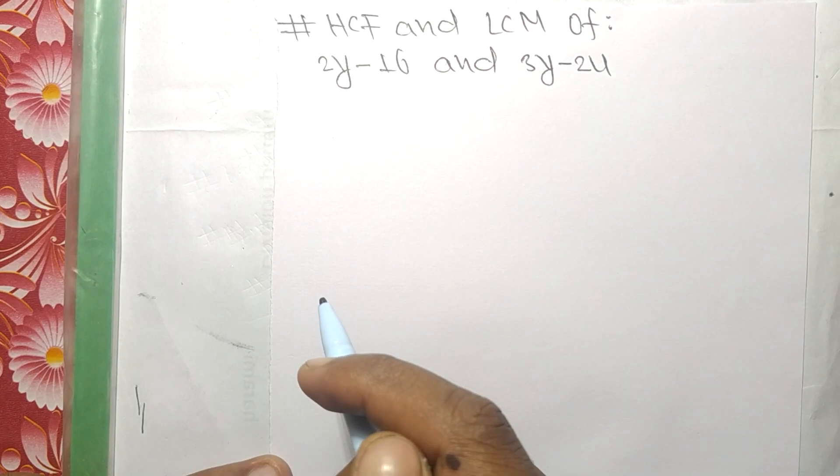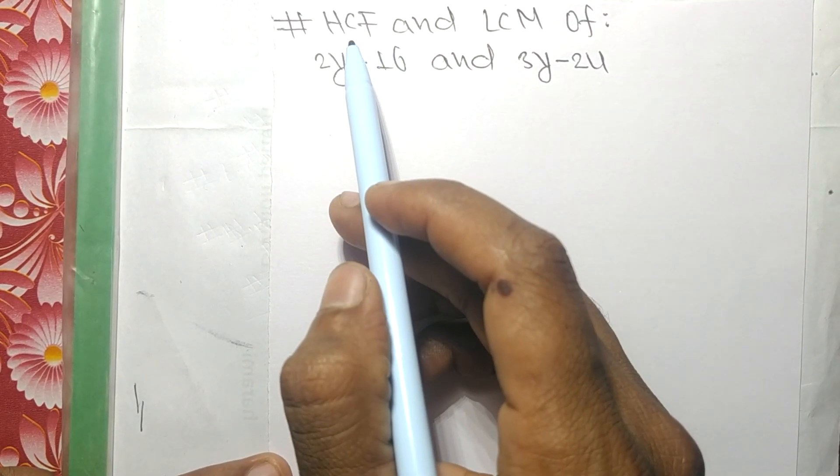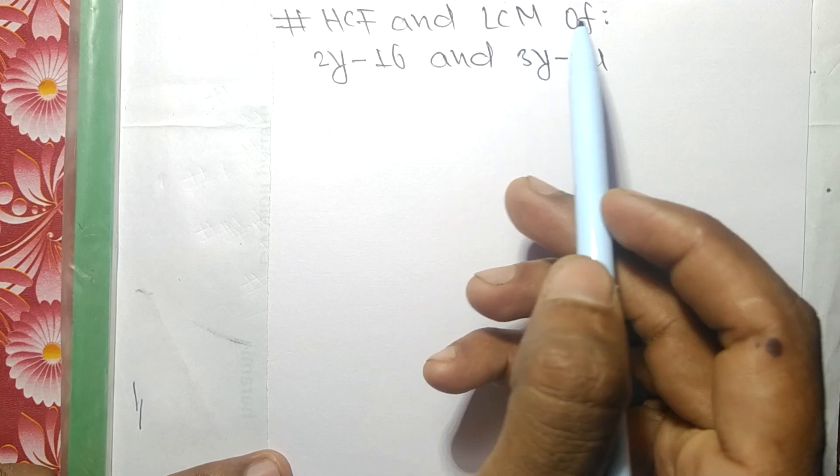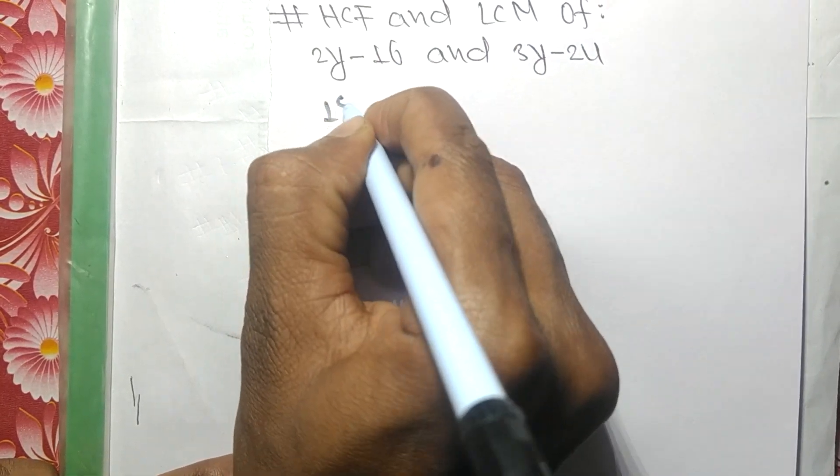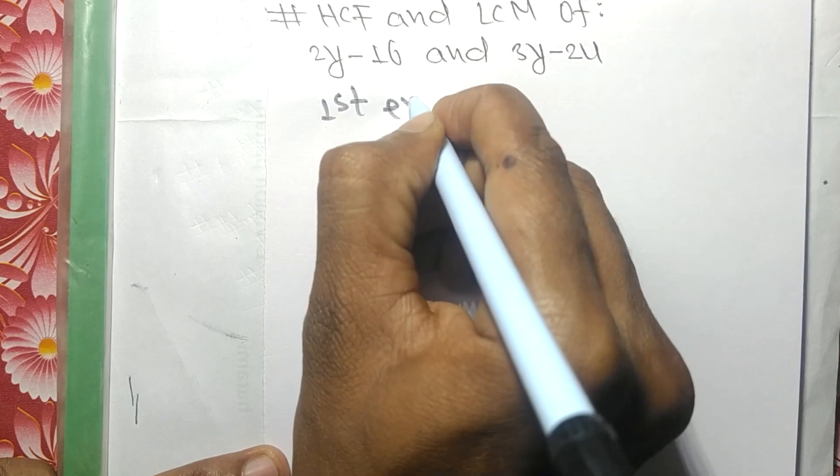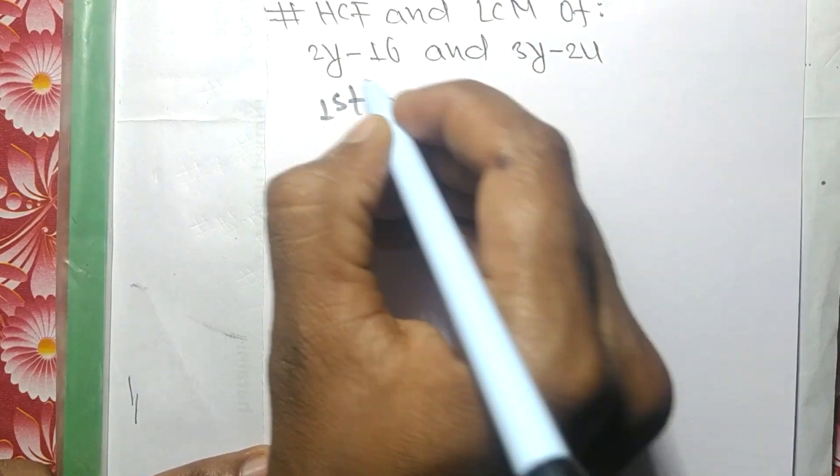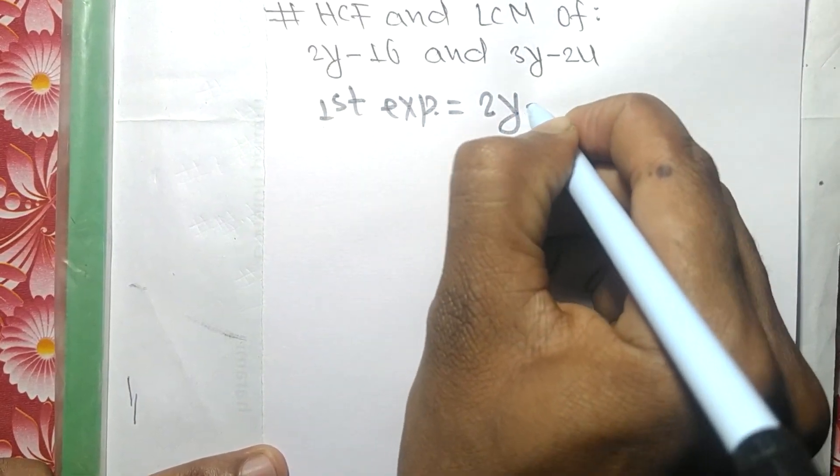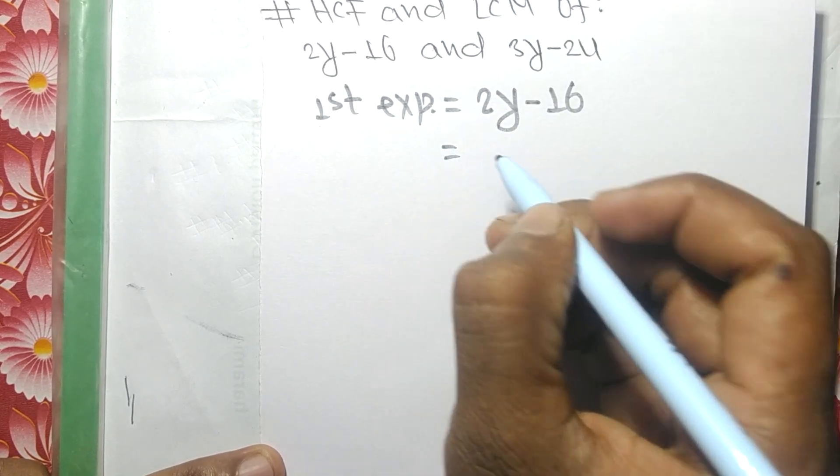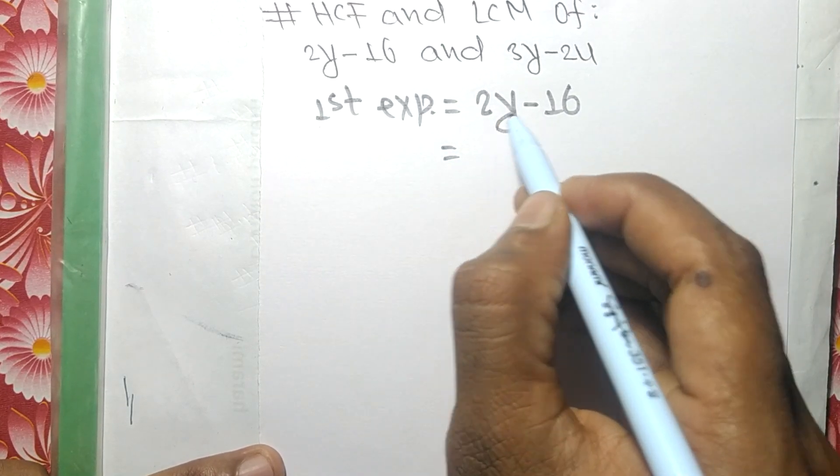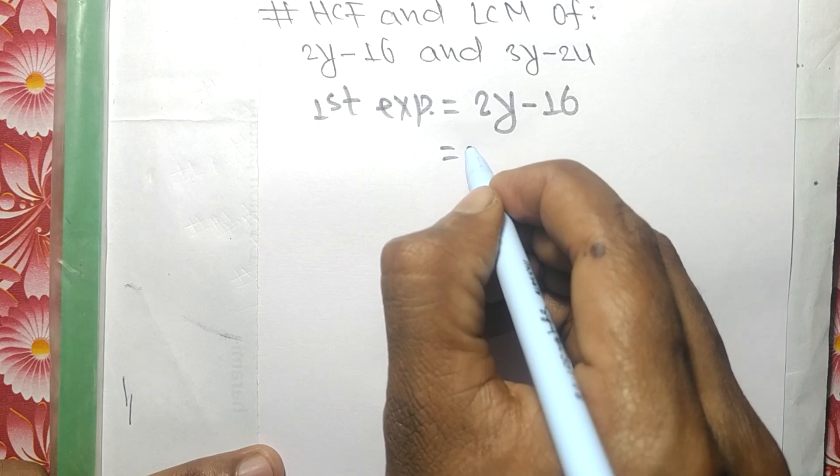Today in this video, we shall find out the HCF and LCM of these both expressions. First expression we have is 2y minus 16. Now we find out common factors in these both, so common here is...